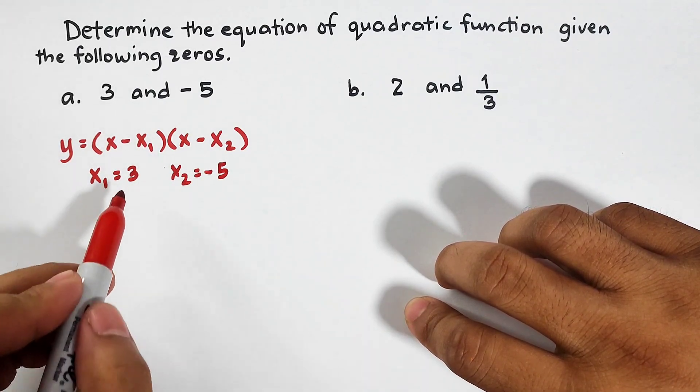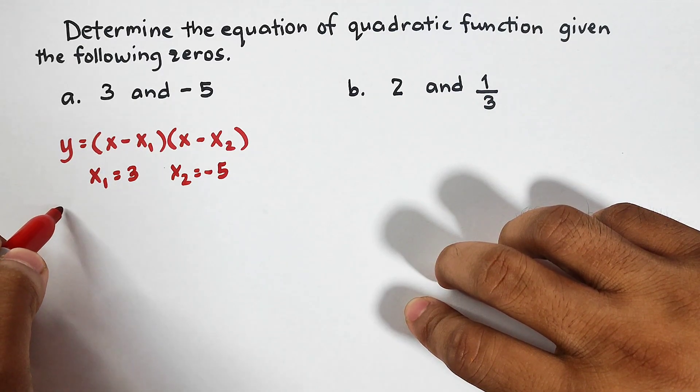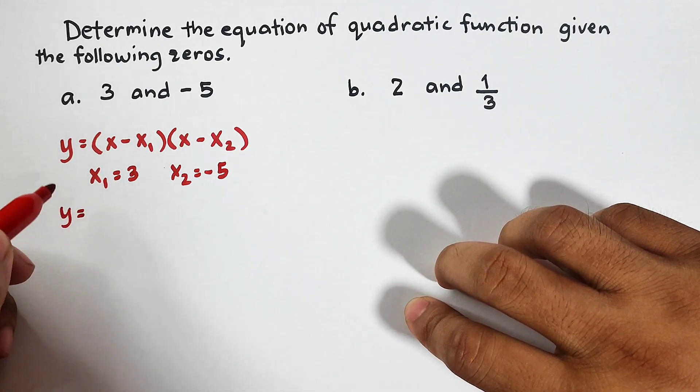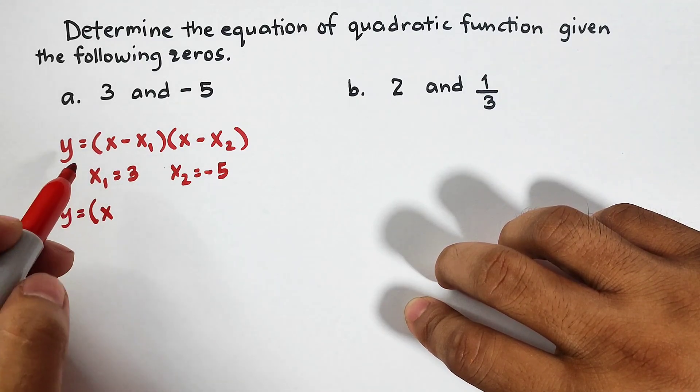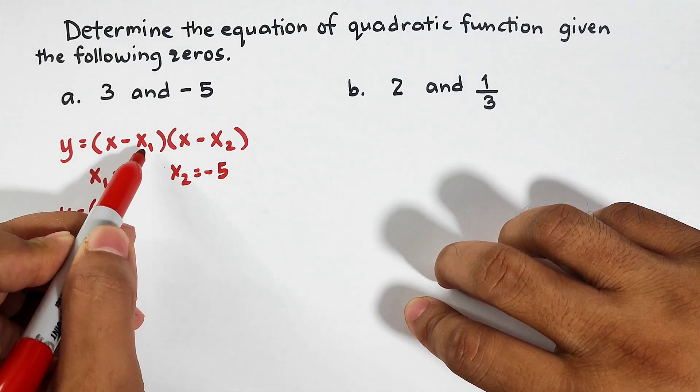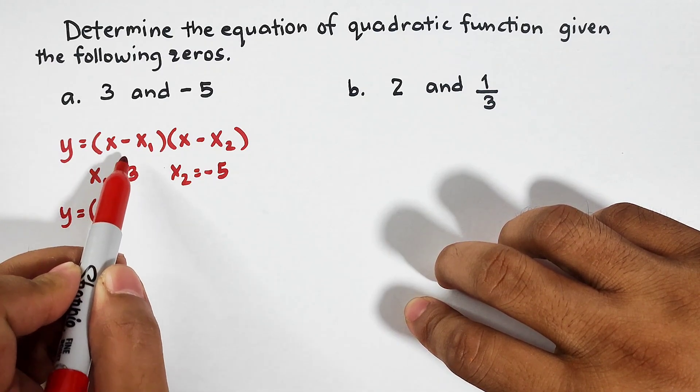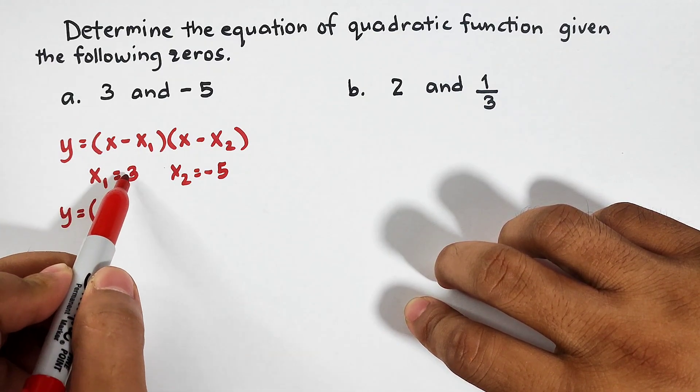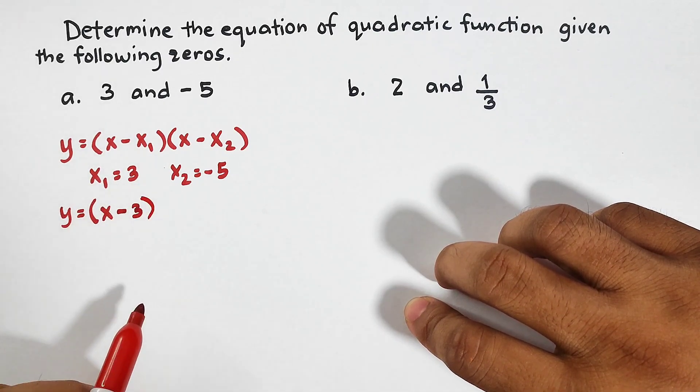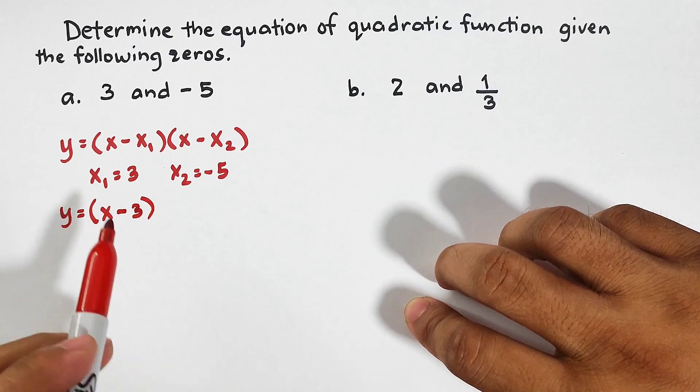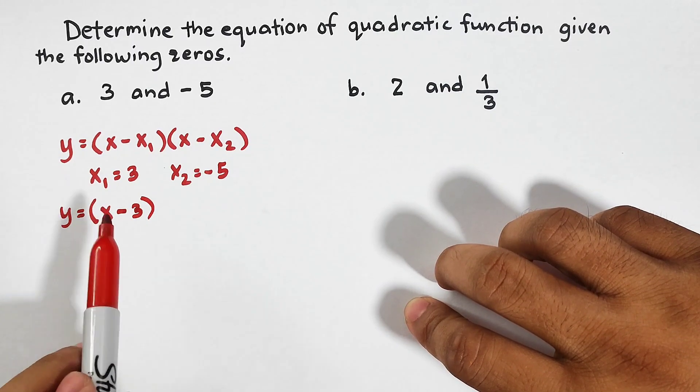What we need to do is substitute these values to the given formula. Let's substitute the formula y equals, this x will be copied as x. Then here, as you can see, we have minus x sub 1. When you substitute 3 with the given formula, if this is positive, make it as negative or minus 3. You need to reverse the symbol or the sign of the value of x.